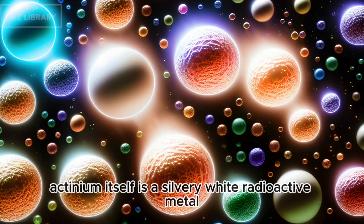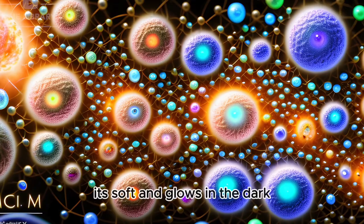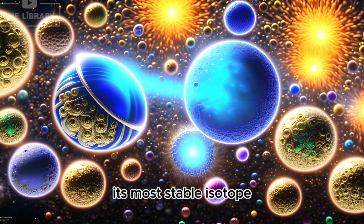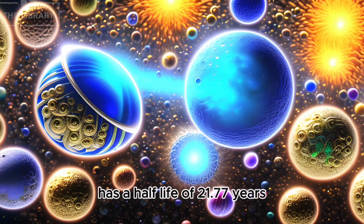Actinium itself is a silvery-white radioactive metal. It's soft and glows in the dark due to its intense radioactivity. Its most stable isotope, actinium-227, has a half-life of 21.77 years.